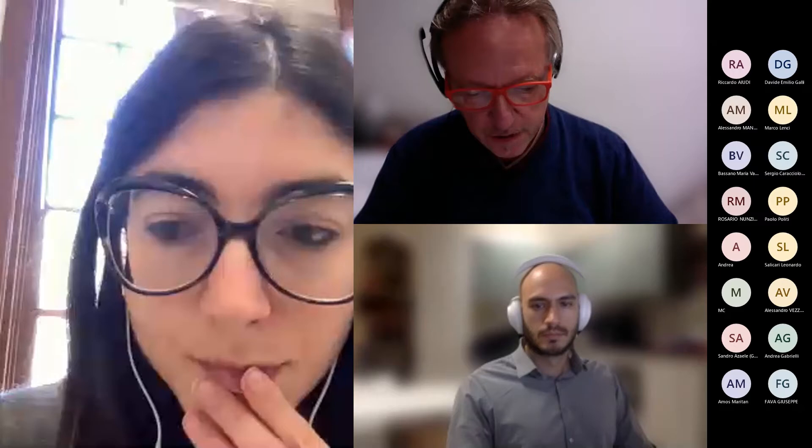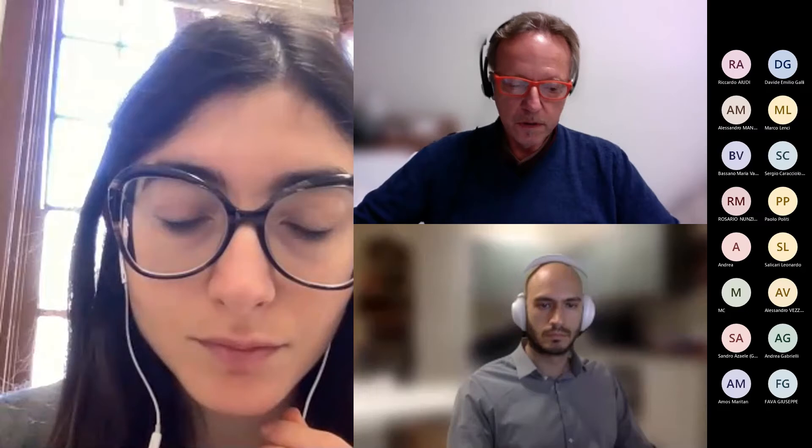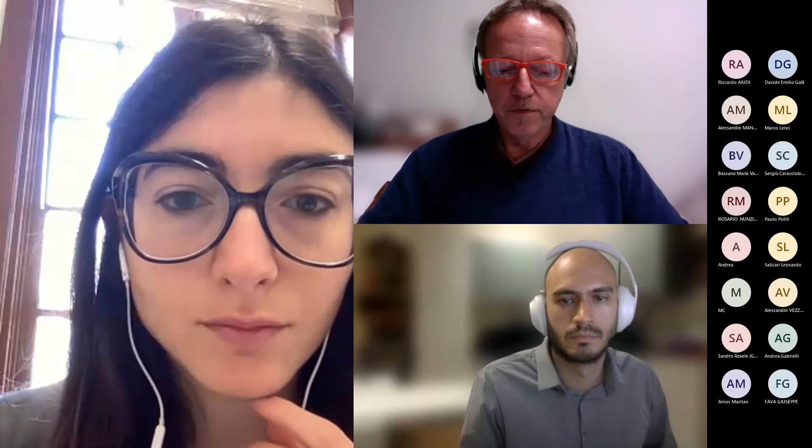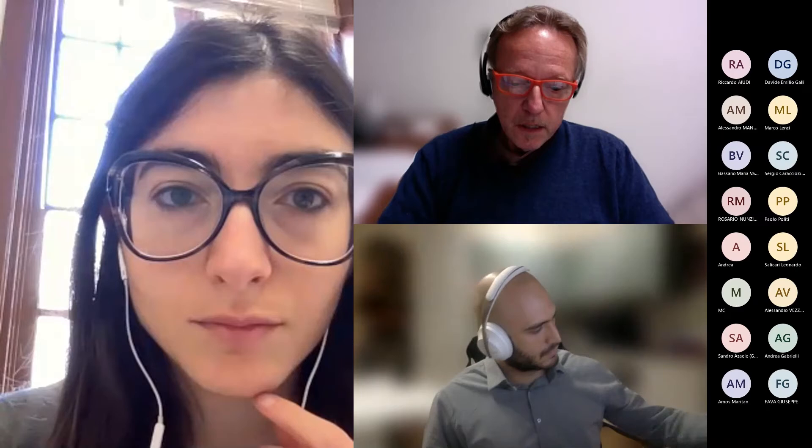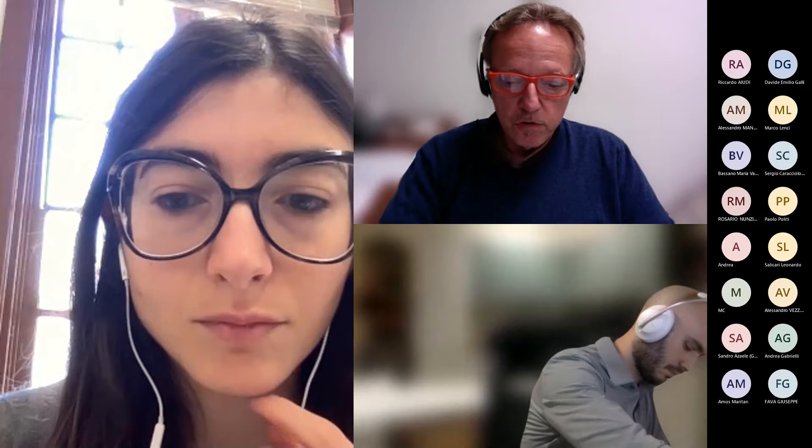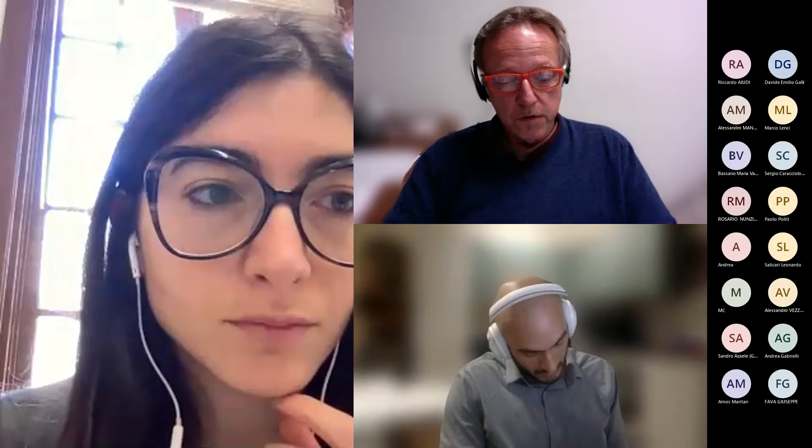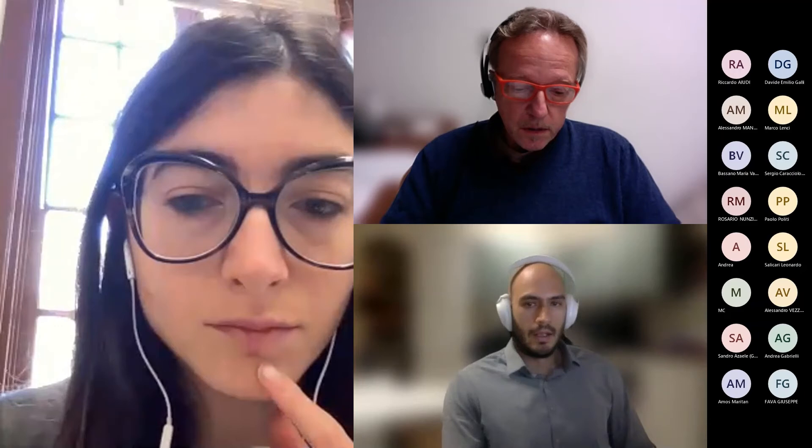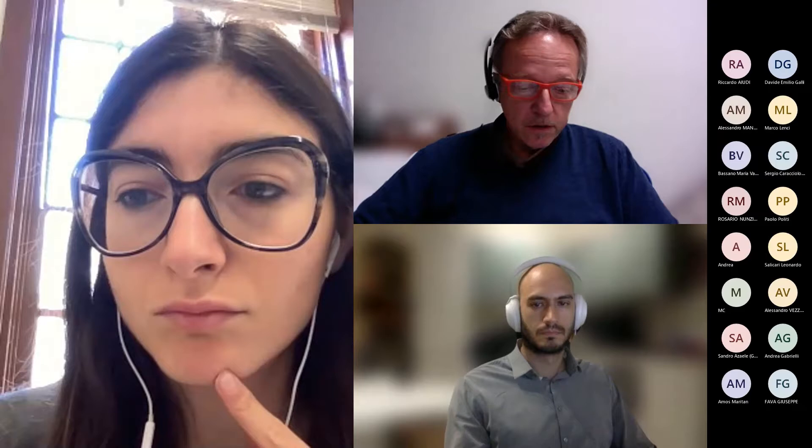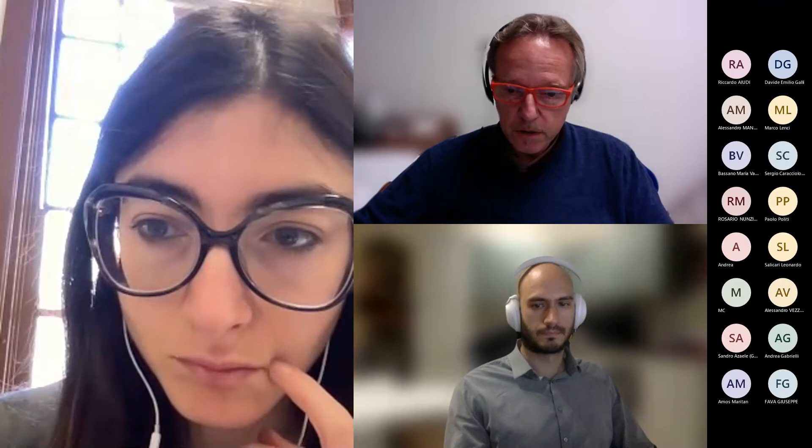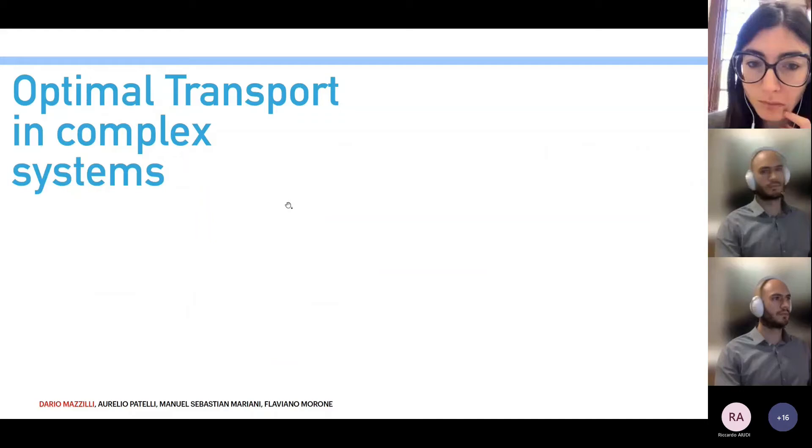And now we can move to Dario Mazzilli, who I will briefly introduce. Dario studied physics in Rome and had his PhD at La Sapienza under Professor Luciano Pietronero. His thesis was on a model to forecast countries' growth from the economic point of view. In this field, he collaborated with the Joint Research Centre of the European Commission as an external expert. Nowadays, he is a researcher at the Enrico Fermi Research Centre in Rome. His field of research is economic complexity. Today, he will give a seminar with the title Optimal Transport Problems in Complex Systems. Please, Dario, you can show your screen and start.